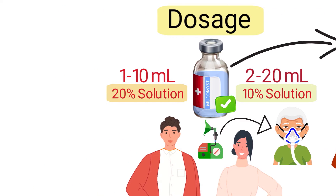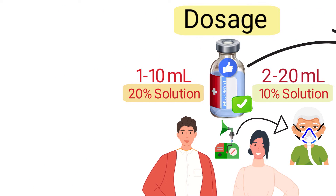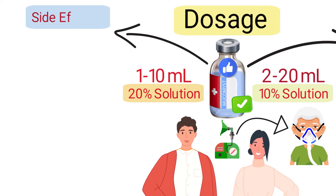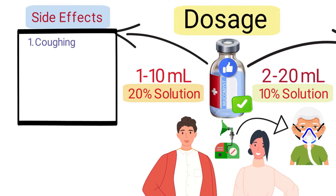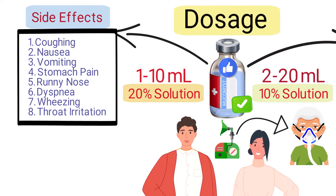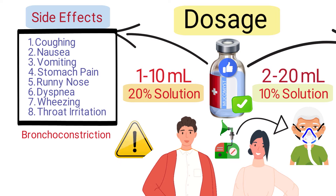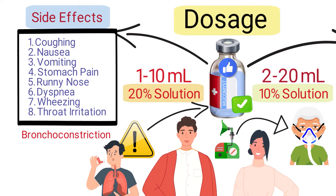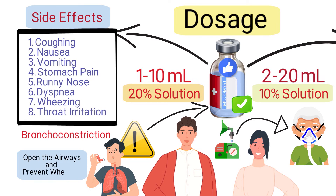The patient can use a mask or mouthpiece with a nebulizer in order to inhale the Mucomist solution. Mucomist is effective in helping to break up mucus, but it can also cause side effects including coughing, nausea, vomiting, stomach pain, runny nose, dyspnea, wheezing, and throat irritation. Bronchoconstriction is an adverse side effect, so a bronchodilator is often administered to help open the airways and prevent wheezing.